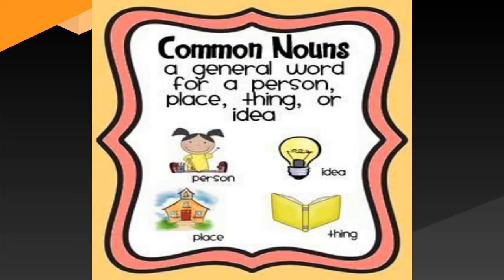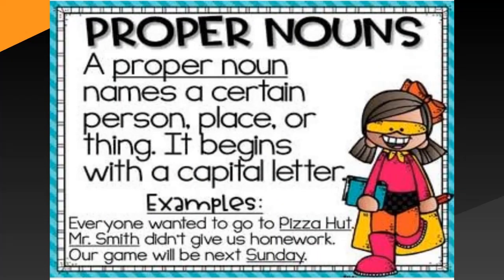Common nouns: a general word for a person, place, thing, animal or an idea. Proper nouns: a proper noun names a certain person, place or thing. It begins with a capital letter.